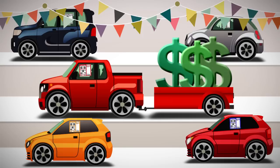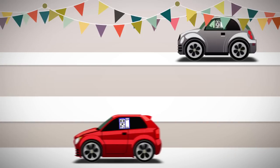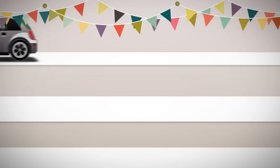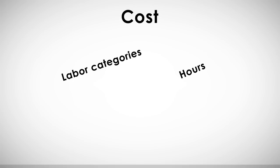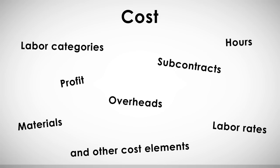In buying a car, I do not need to know how much the individual component parts cost or what kind of labor went into the production of the car. Then there's cost level information. Cost level information looks at all of the cost elements required in making an item or performing a service. This information will include labor categories, hours, labor rates, overheads, profit, materials, subcontracts, and all other cost elements.